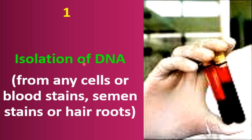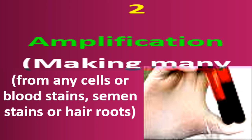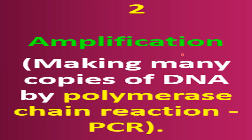The first step of DNA fingerprinting is isolation of DNA. DNA is isolated from any cell, blood stain, semen stain, or hair roots. For example, in a crime case, a blood stain from the crime spot can be taken to isolate the DNA. The second step is amplification of DNA.